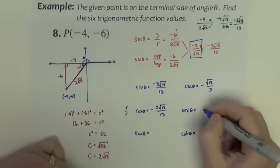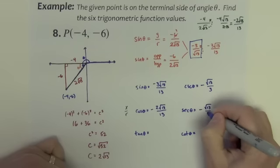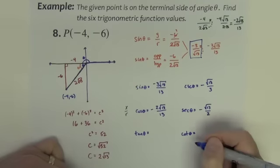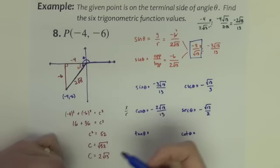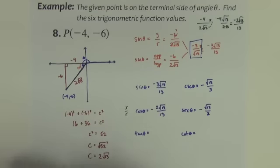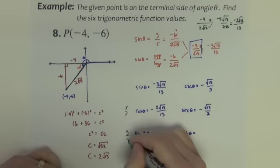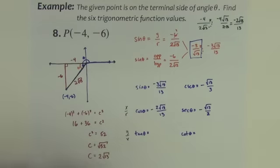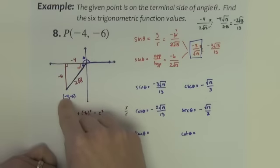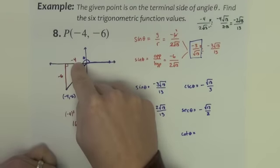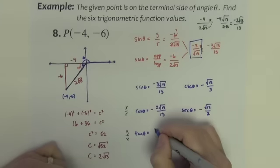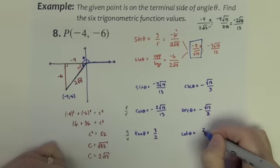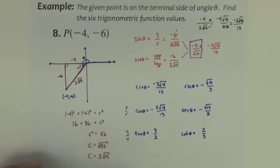If I were to flip that over, negative square root of 13 over 2. Tangent, a little easier. Tangent is, I can think of tangent as opposite over adjacent or y over x. Either way, I end up with negative 6 over negative 4, which is 3 halves. Cotangent is the reciprocal, 2 thirds. And we've got it.